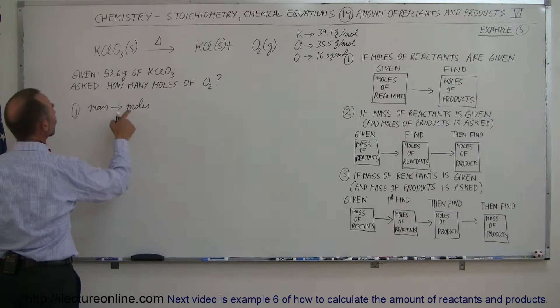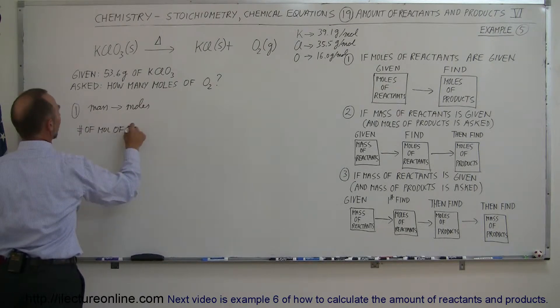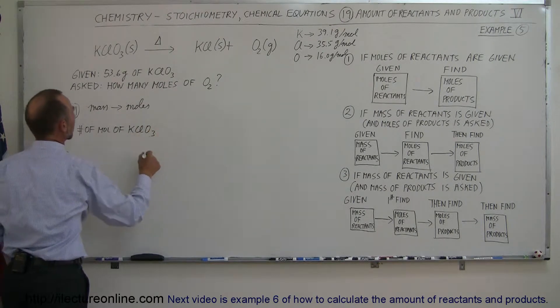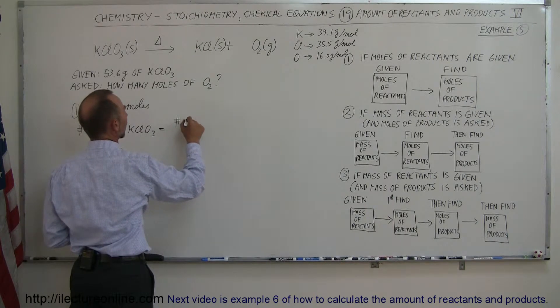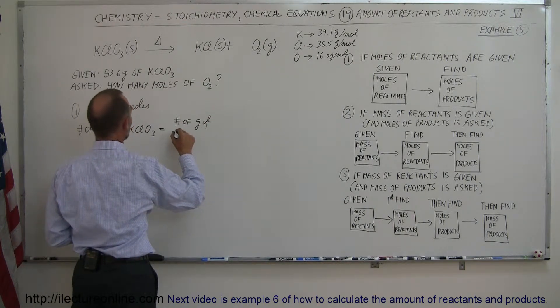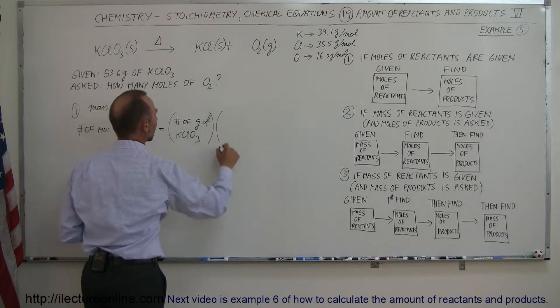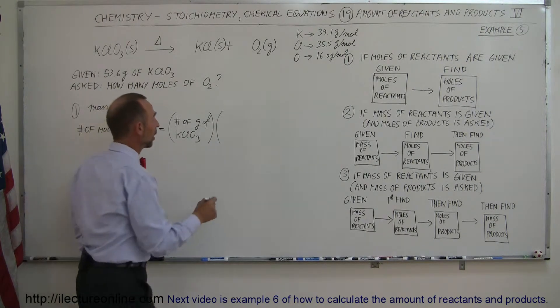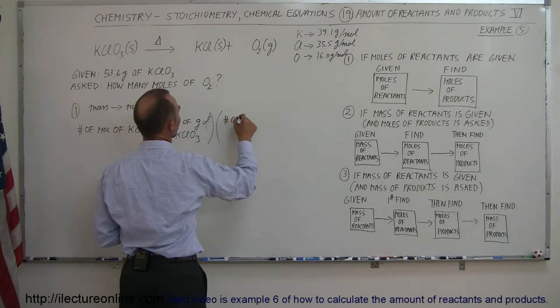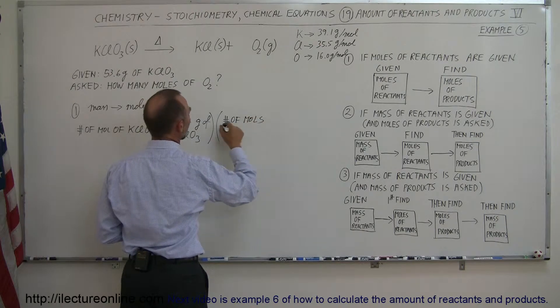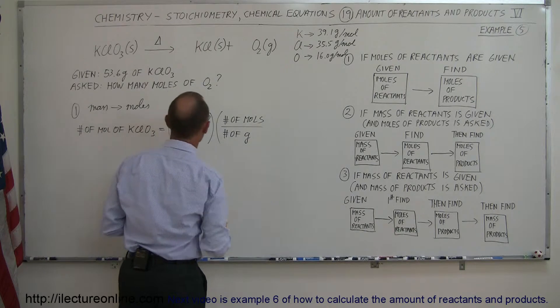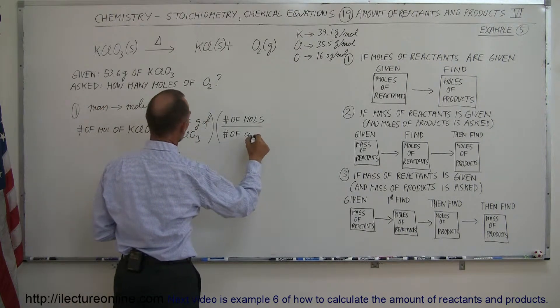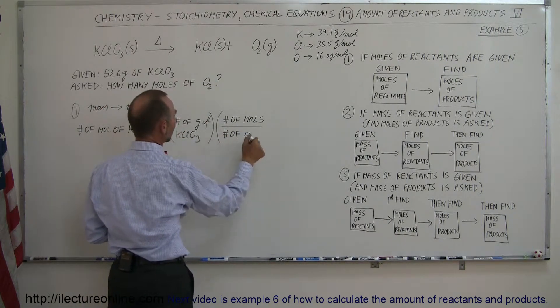And so we want to know the number of moles of potassium chlorate. And that's going to be equal to the number of grams of potassium chlorate, multiply times the ratio of the number of moles per number of grams. So that will give us, of course, of potassium chlorate. So the number of grams will cancel out. We'll end up with the number of moles.